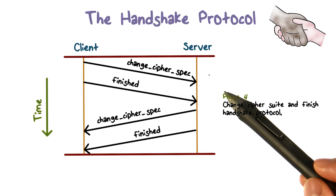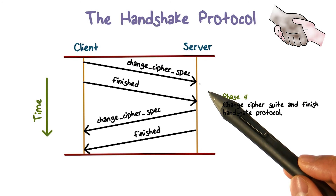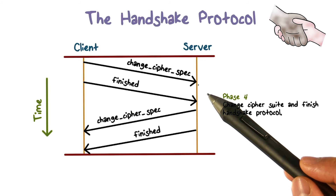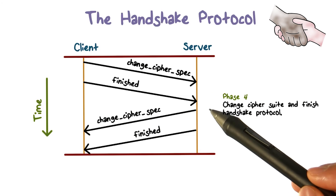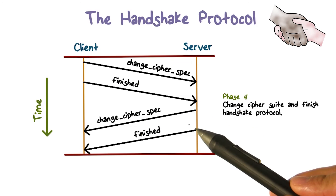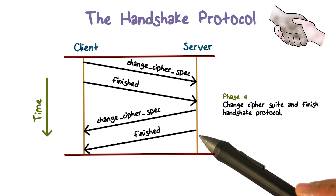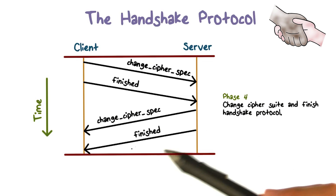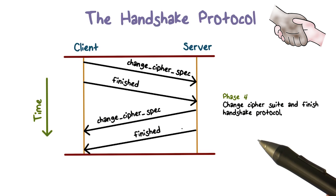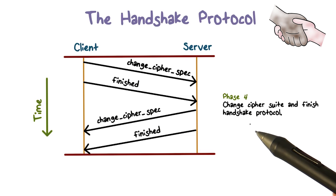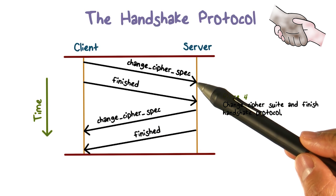In phase four, the client sends a change cipher spec message and copies the pending security parameters to the current cipher spec. It then signals the completion of the handshake protocol. In response, the server sends its own change cipher spec, and they now agree on the security parameters. The server then sends its own message to signal the end of the handshake. At this point, the handshake is complete, and the client and server can begin to exchange application layer data, protecting it using the agreed upon security parameters.